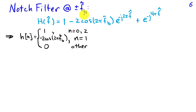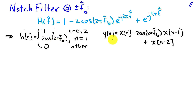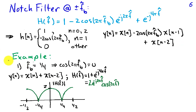So the frequency response can be rewritten in the simplified form, and this system will have exactly 0 gain at f hat sub b and minus f hat sub b. We identify the impulse response by picking off the coefficients: there is a 1 for the n equals 0 term, 1 for the n equals 2 term, and minus 2 cosine of 2 pi f hat b for the n equals 1 term. This gives the input-output equation for the notch filter as y of n equals x of n minus 2 cosine of 2 pi f hat b times x of n minus 1 plus x of n minus 2.